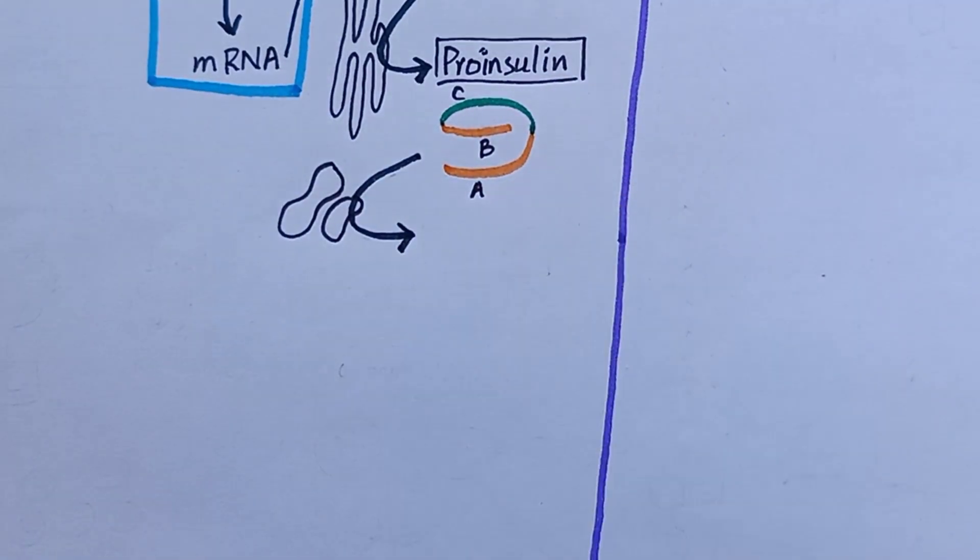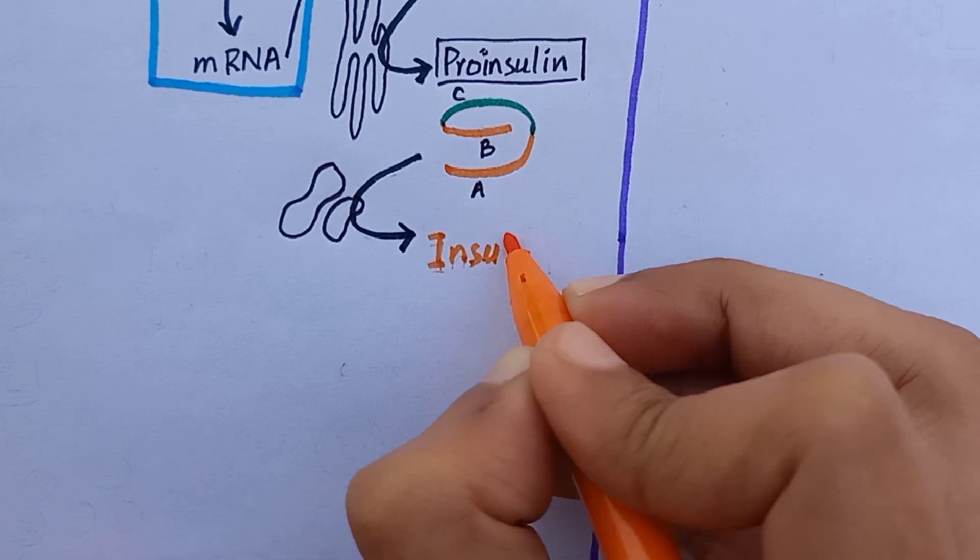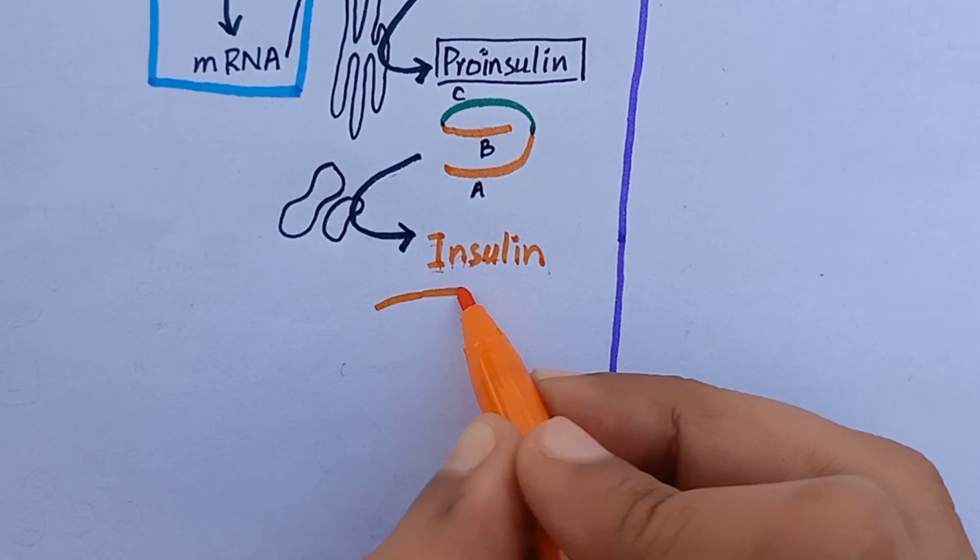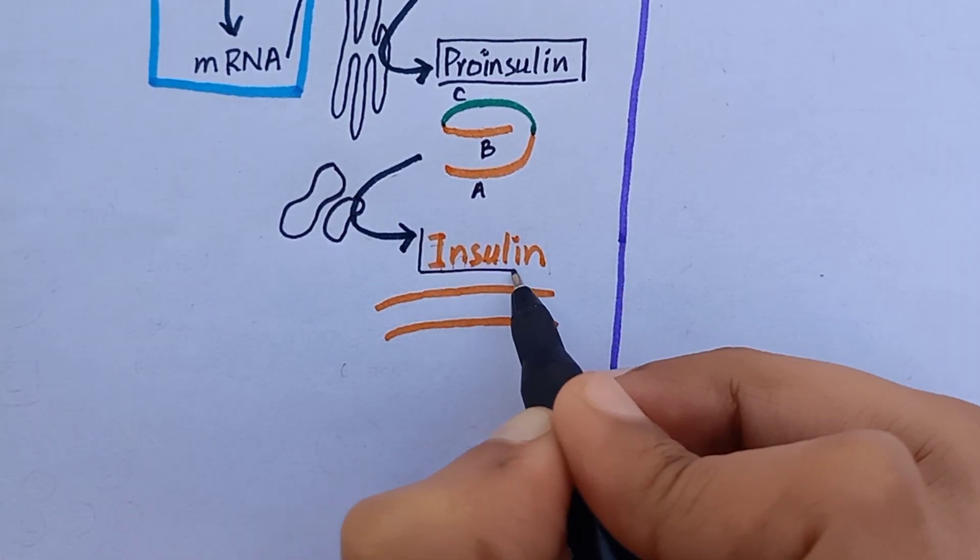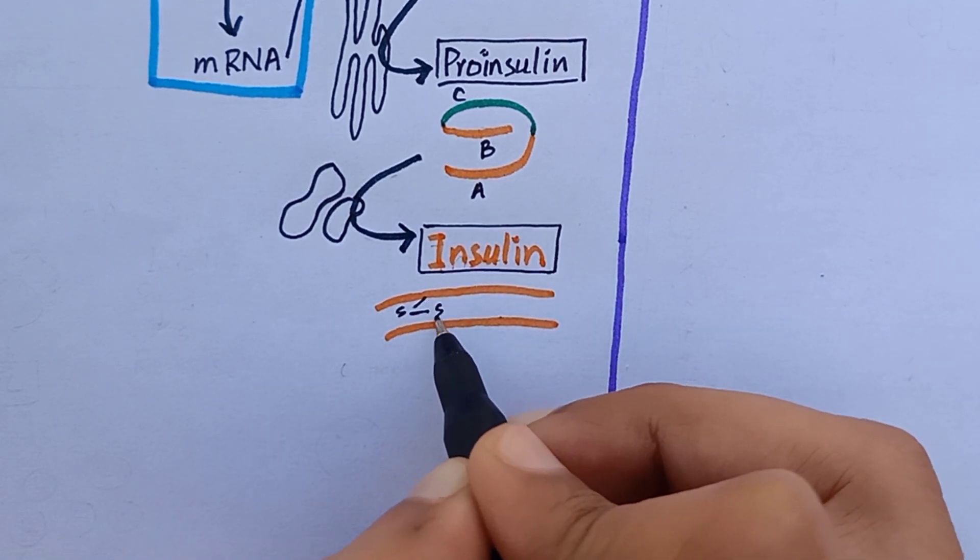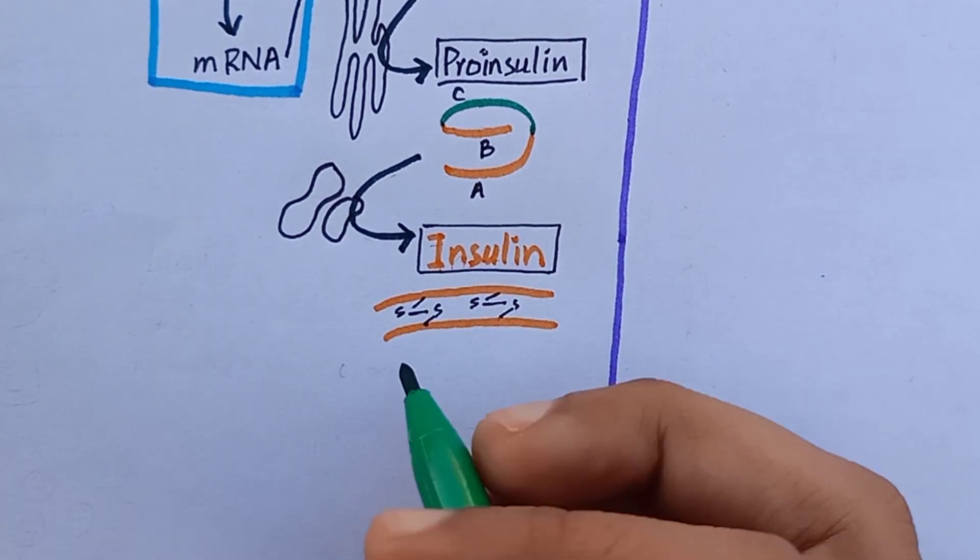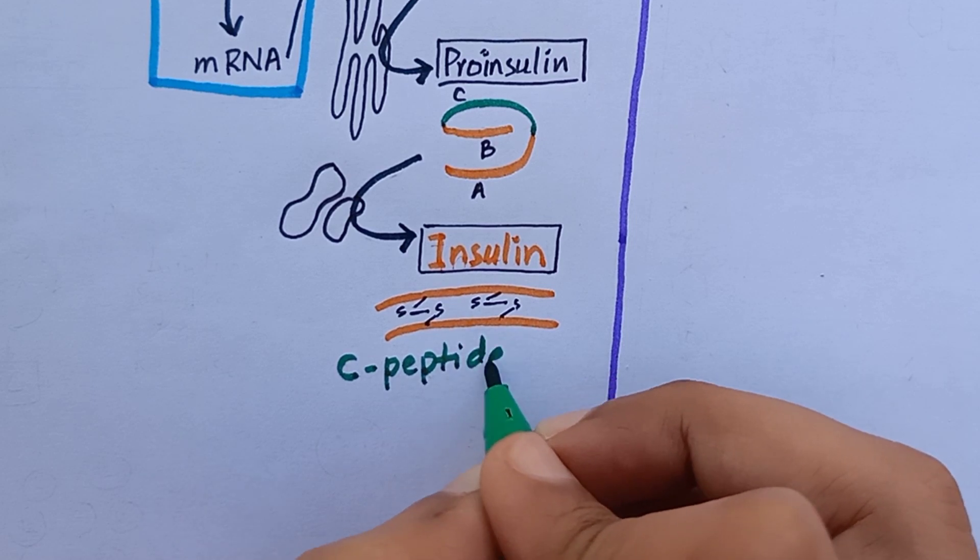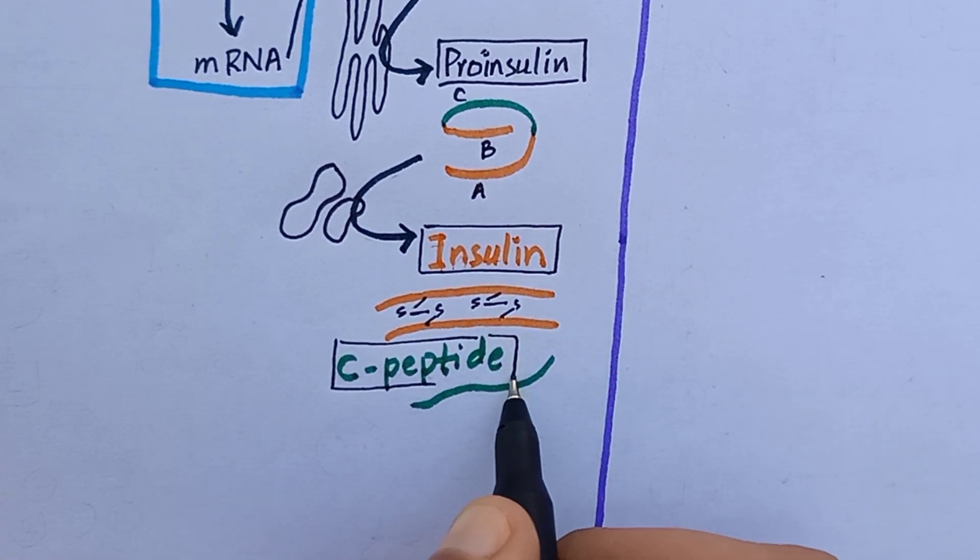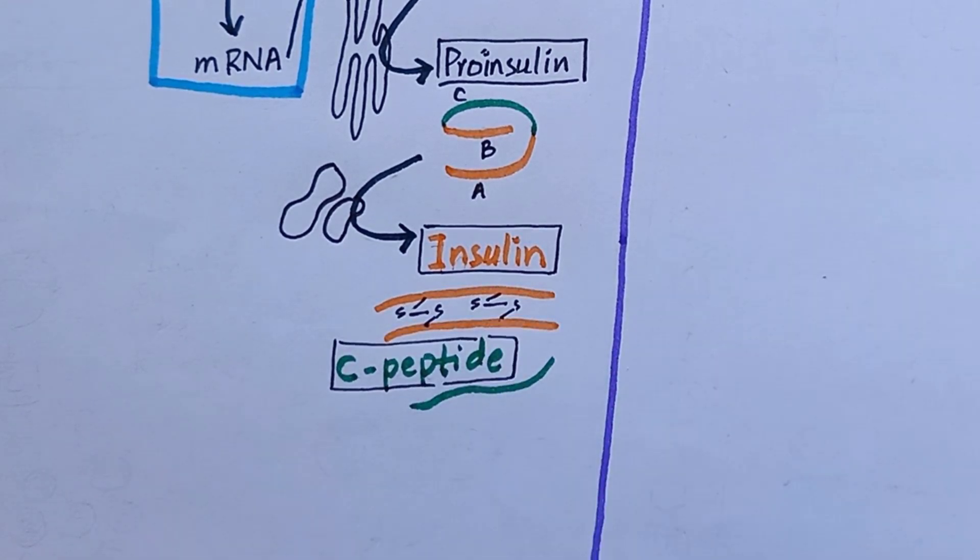Most of proinsulin is further cleaved in Golgi apparatus to form insulin. Insulin is a small peptide composed of A and B chain connected by disulfide linkages and the C-peptide chain that is called connecting peptide. C-peptide is important because it can be measured in insulin-treated diabetic patients to determine how much of their own natural insulin they are still producing because exogenous insulin lacks C-peptide.